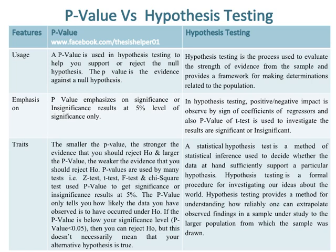The smaller the p-value, the stronger the evidence that you should reject H0. And the larger the p-value, the weaker the evidence that you should reject H0.